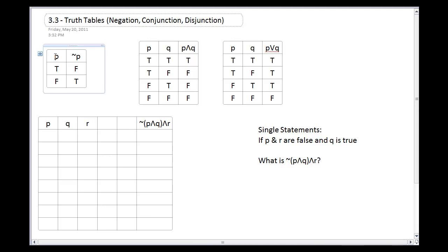For example, you're on the island of truth and lies — the tribe of truth only tells the truth, and the tribe of lies always lies. You meet two people and you ask which is the safe path to take. Those are the kinds of logic puzzles that truth tables help you solve.